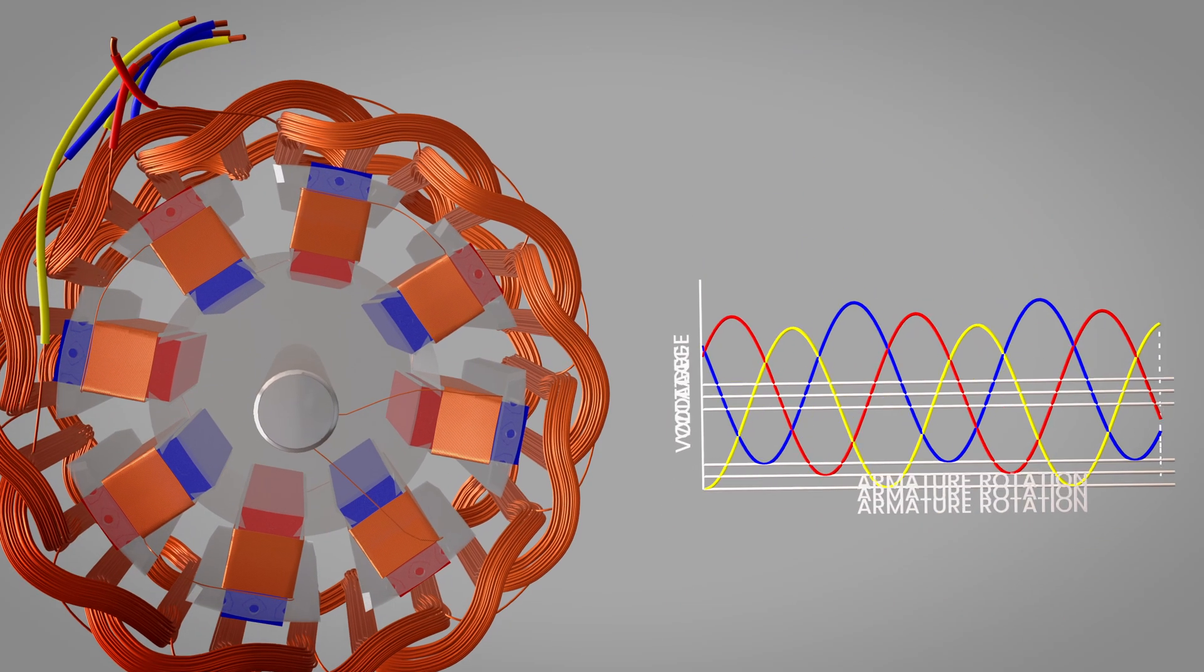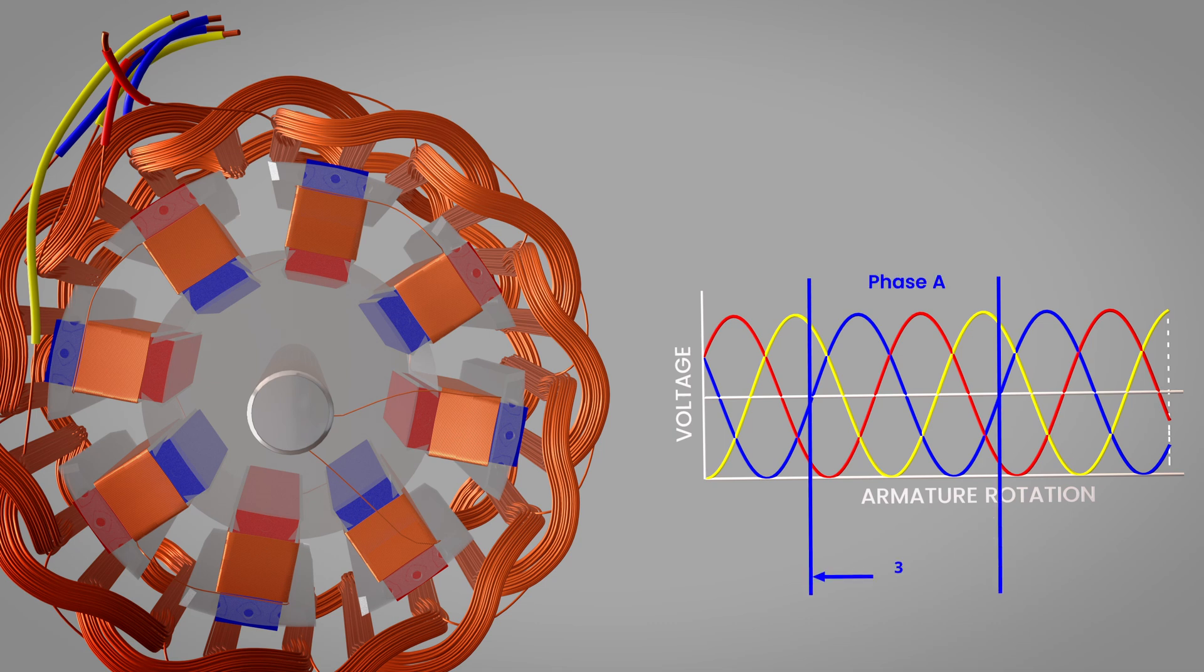Watch the three voltage graphs. Phase A generates its sine wave first, phase B follows 120 degrees behind, and phase C trails by another 120 degrees. These three sinusoidal voltages have identical amplitude and frequency but are perfectly offset in time. This creates balanced three-phase power. The sum of the three voltages always equals zero, providing smooth, constant power delivery with minimal vibration.